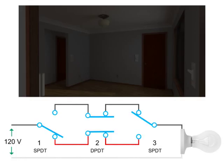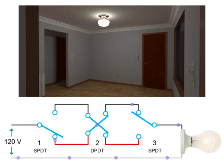If we keep switch one and three in the same positions and throw switch two into the crossover position, a complete connection is once again established and current flows through the red wire to the black wire to power the light bulb.